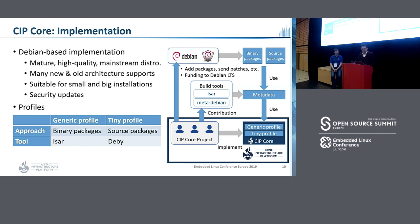So what is the CIP core implementation? Currently it's based on Debian, which is one of the major and high-quality distributions in the world. From a long time ago it has supported many new and old CPU architectures, and is scalable for various systems from small to large where many packages need to be installed. It also provides a lot of security updates frequently by the Debian security team, and also the Debian LTS and Debian extended LTS projects.